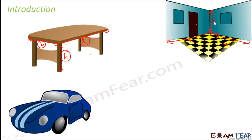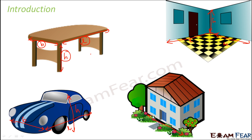A table, a car, a room — these are things we actually see around us; they are not just theoretical figures. For a house you also have length, breadth, and height. Most of these objects are solid objects, and these solid objects generally need three parameters to specify their size.